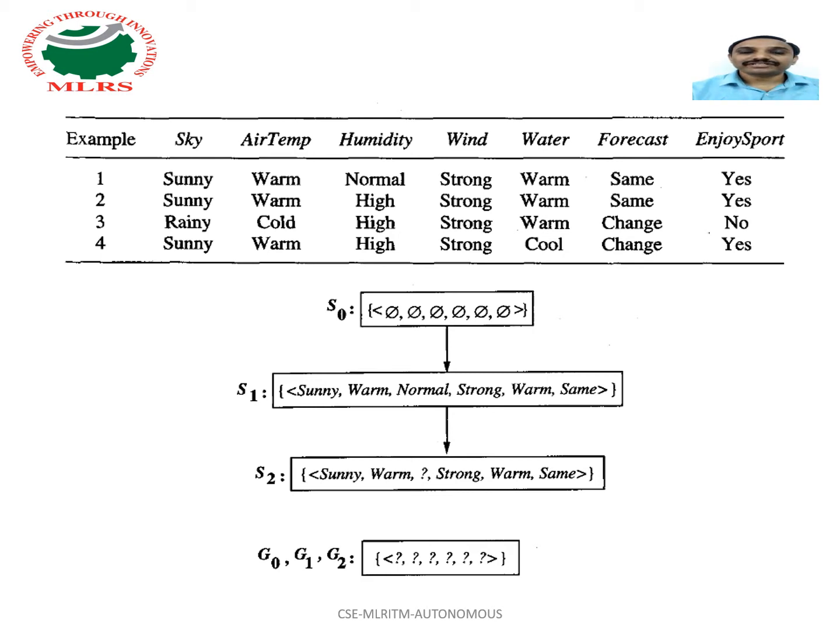By considering the first positive example, we are creating S1. S1 contains sunny, air temperature, humidity, wind, water, and forecast.